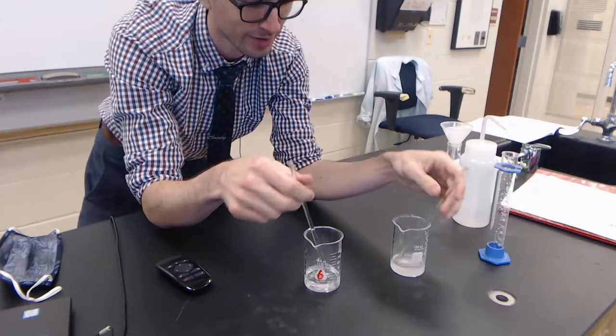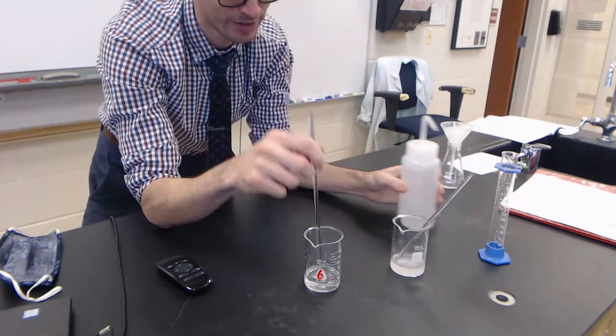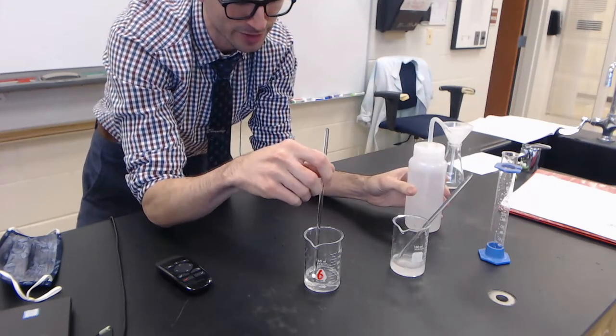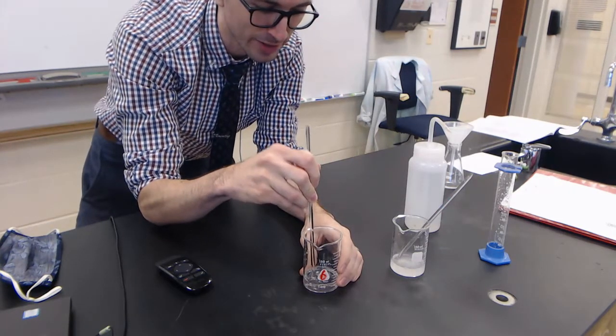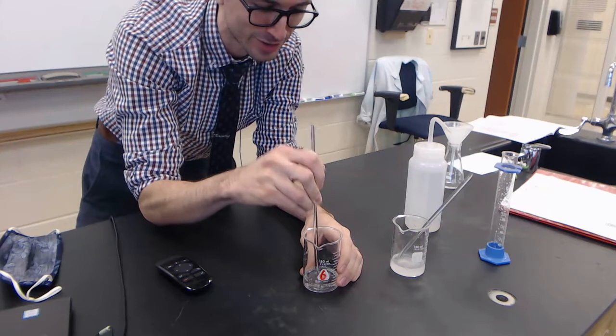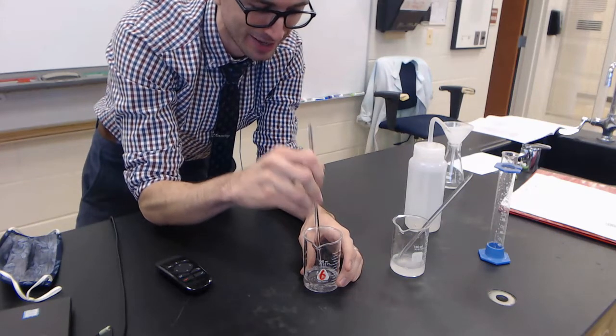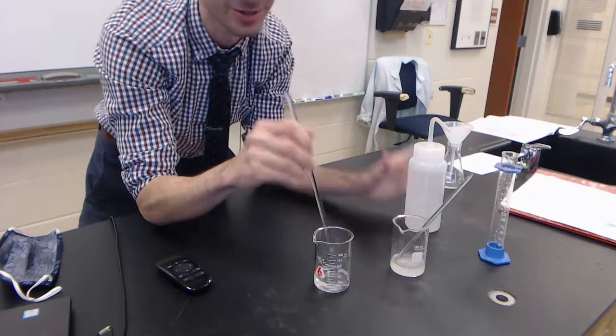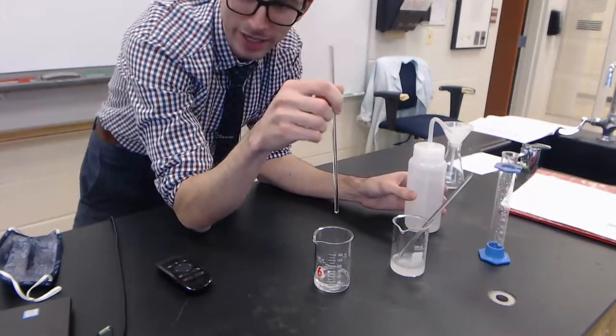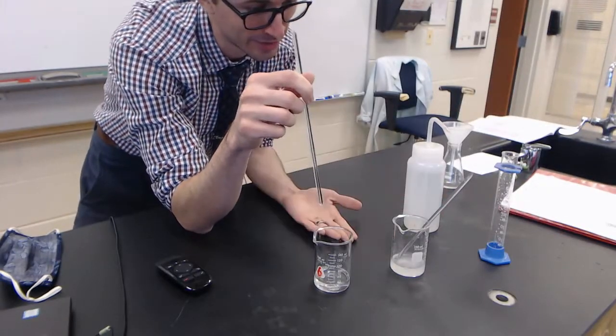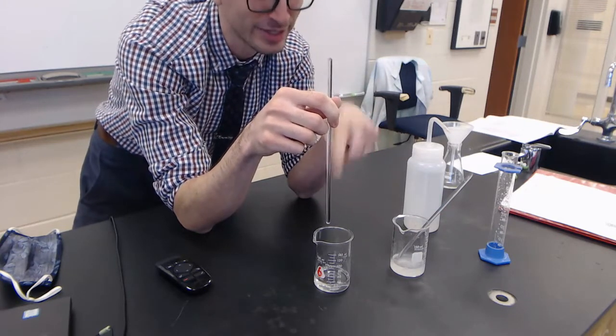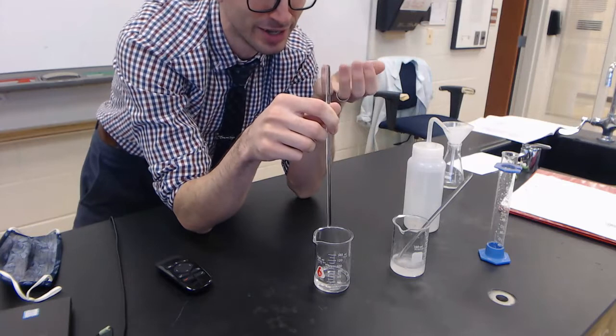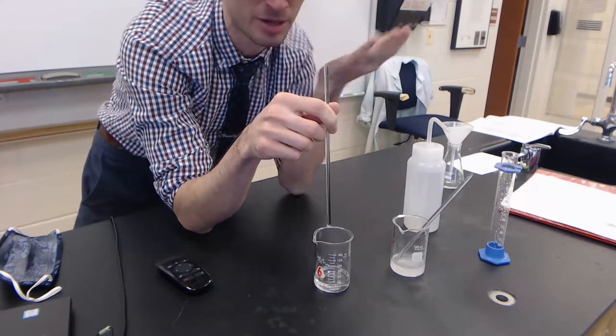One thing you're going to see me do here is—I always relate this to chili. If I just take this stirring rod and put it on the table, I lose some product, just like if I eat chili with a spoon and then take the spoon out and put it on the table, I'm going to get chili on the table.